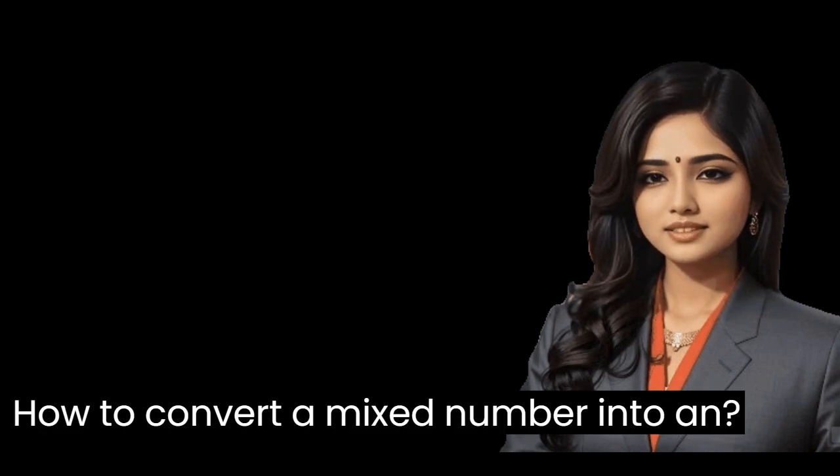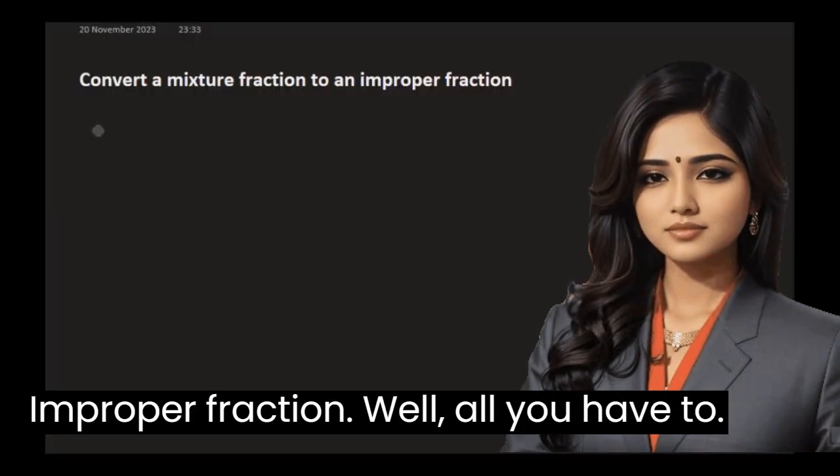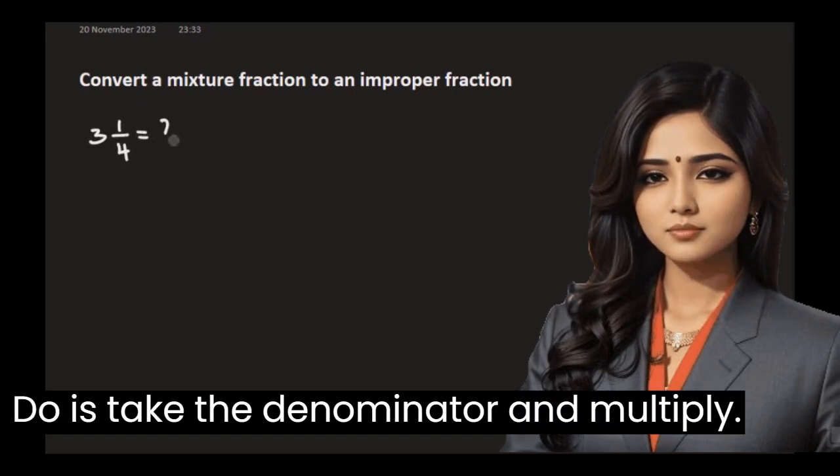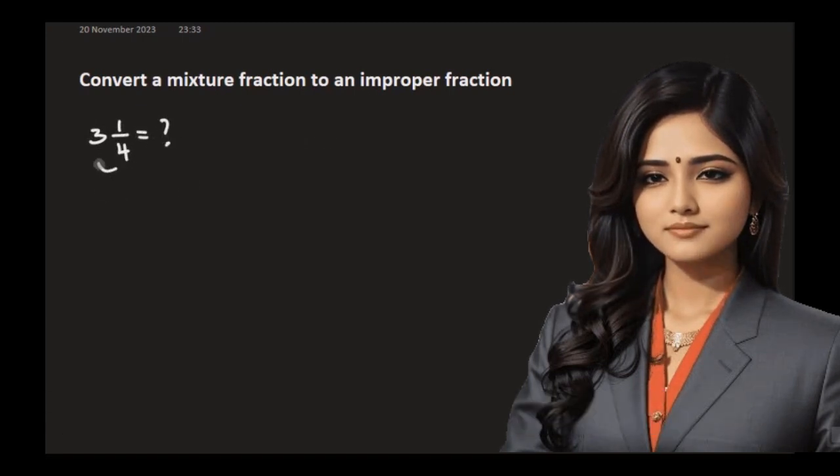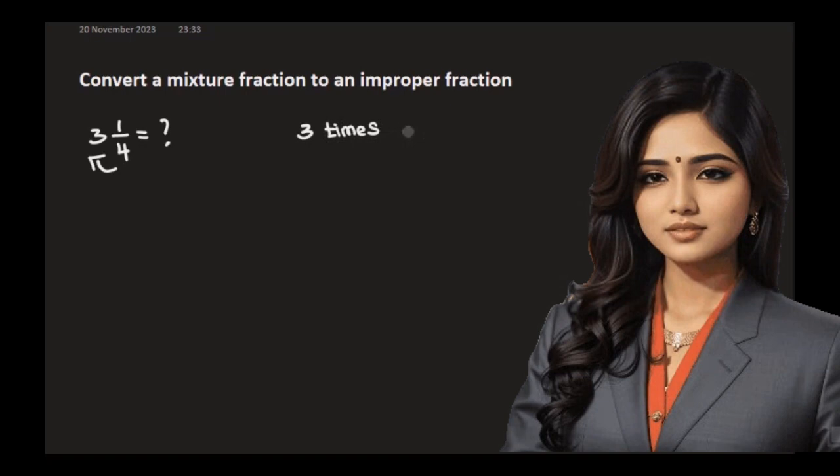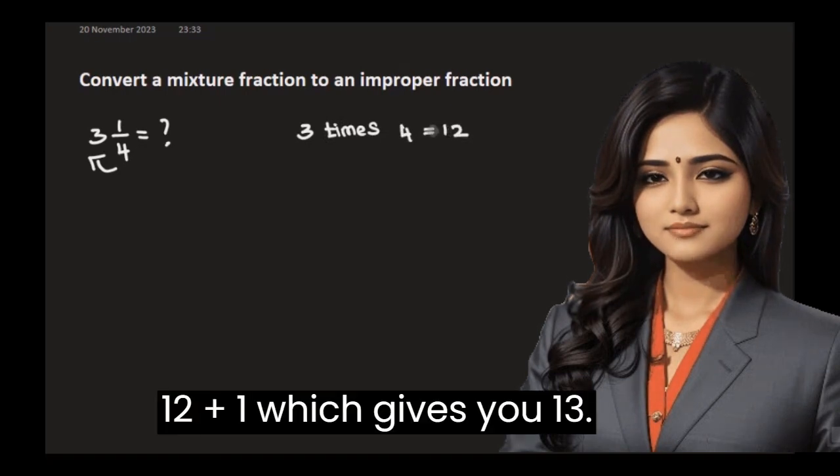How to convert a mixed number into an improper fraction. All you have to do is take the denominator and multiply with the whole number and add the numerator. So we have 4 times 3 equals 12 plus 1 which gives you 13.